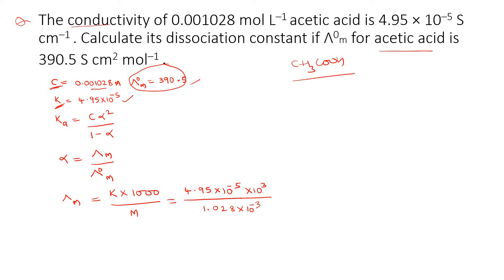The data given are: concentration, molar conductance at infinite dilution, and specific conductance. They are asking us to calculate dissociation constant Ka. To calculate Ka, we need alpha. Alpha = lambda M divided by lambda naught M. Lambda naught M is given as 390.5, so once we calculate lambda M, we get alpha.